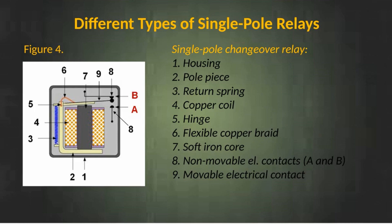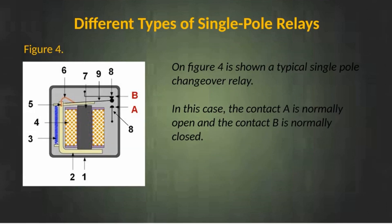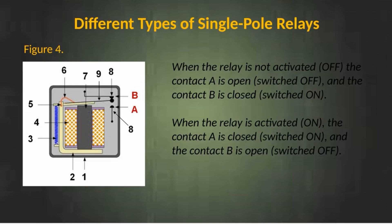Single pole changeover relay. The components are: 1. Housing, 2. Pole piece, 3. Return spring, 4. Copper coil, 5. Hinge, 6. Flexible copper braid, 7. Soft iron core, 8. Non-movable contacts A and B, 9. Moveable electrical contact. On figure 4 is shown a typical single pole changeover relay. In this case, contact A is normally open and contact B is normally closed. When the relay is not activated, contact A is open and contact B is closed. When the relay is activated, contact A is closed and contact B is open.